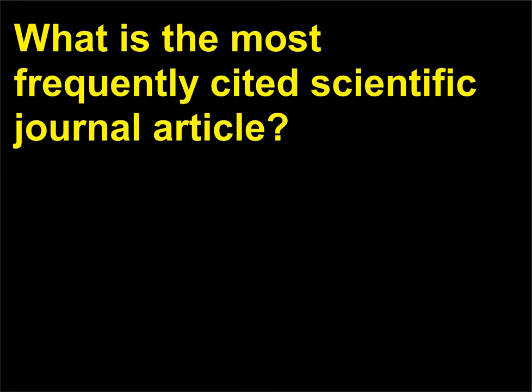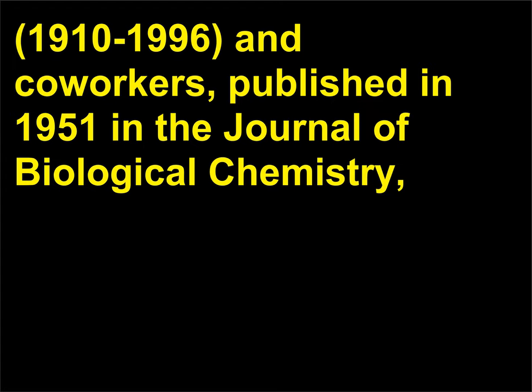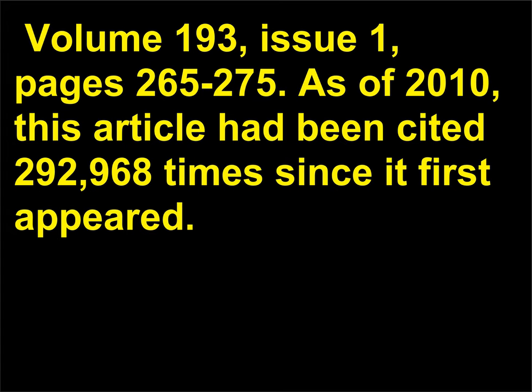What is the most frequently cited scientific journal article? The most frequently cited scientific article is 'Protein Measurement with the Folin Phenol Reagent' by Oliver Howe Lowry, 1910–1996, and co-workers, published in 1951 in the Journal of Biological Chemistry, Volume 193, Issue 1, pages 265–275. As of 2010, this article had been cited 292,968 times since it first appeared.